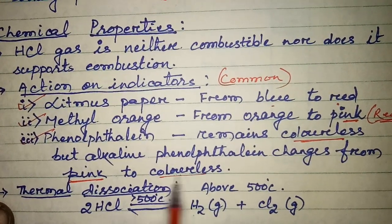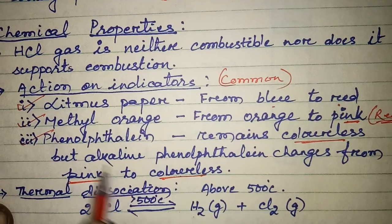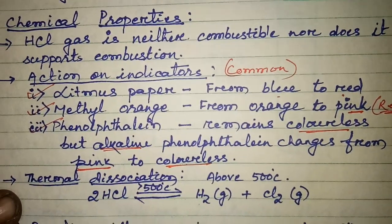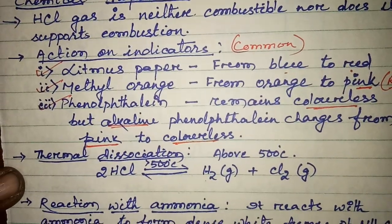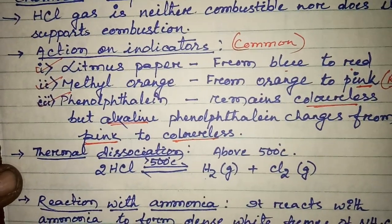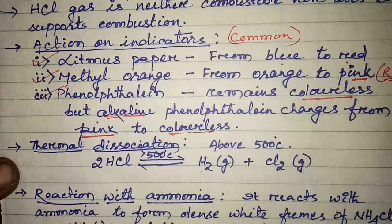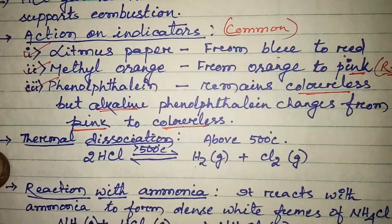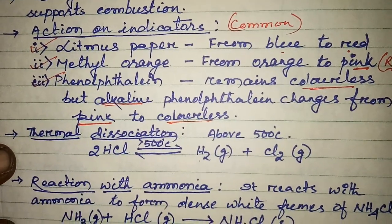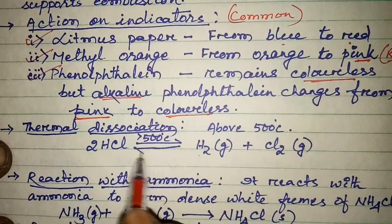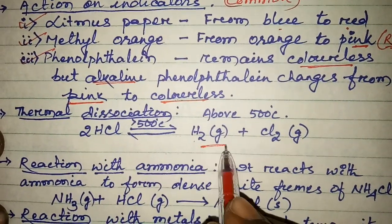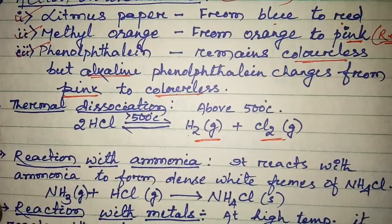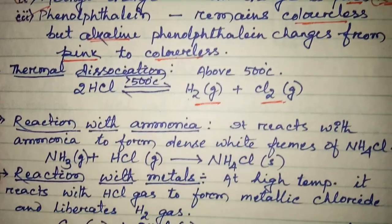Most importantly, alkaline phenolphthalein changes from pink to colorless. Now we discuss thermal dissociation. At above 500 degrees centigrade, dry HCl gas breaks down or dissociates into hydrogen gas and chlorine gas.